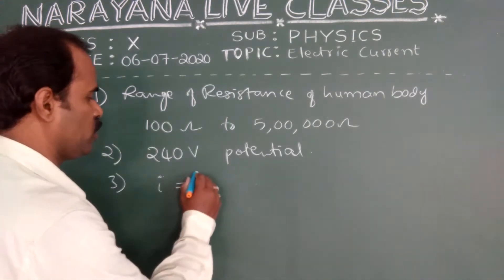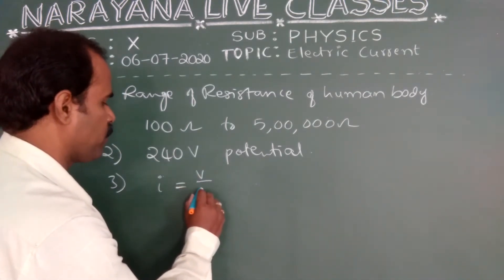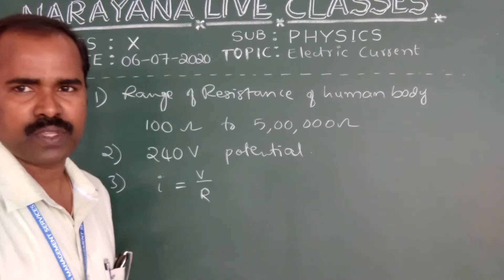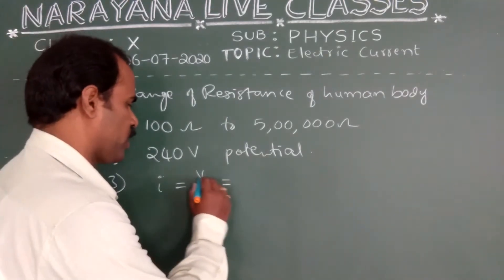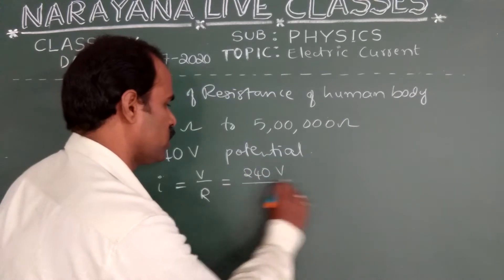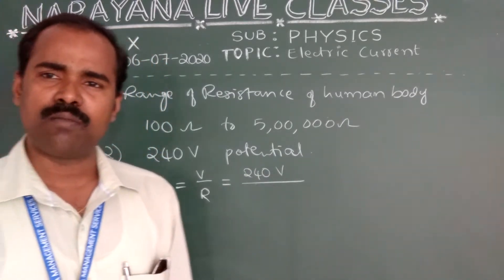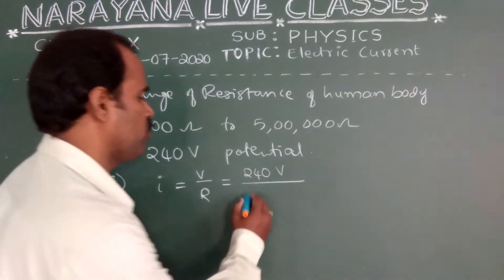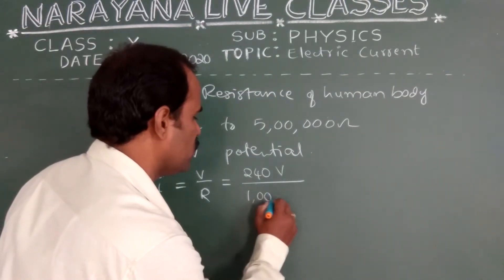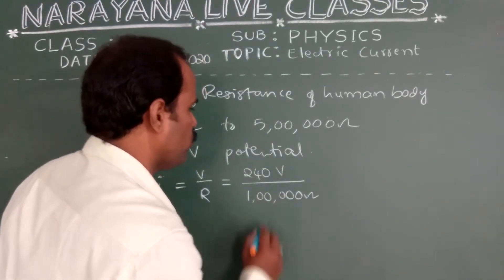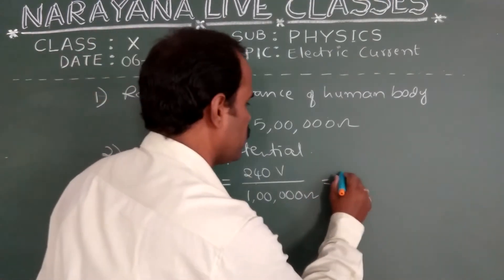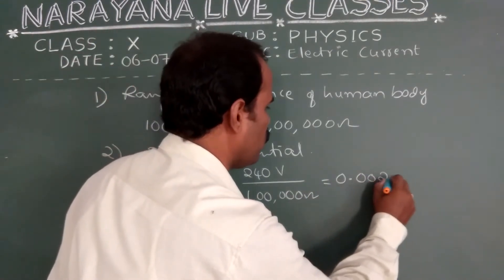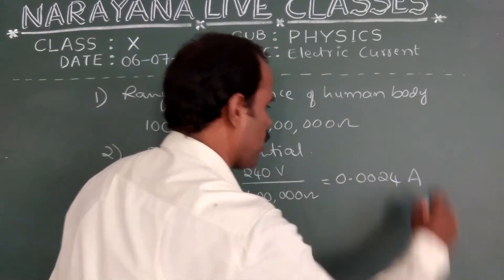Current I is equal to V by R. That we know. We are using the potential of 240 volts. And our body average resistance offered by our body, human body is 100,000 ohms. Then what we get? 0.0024 ampere.